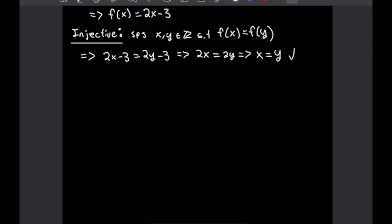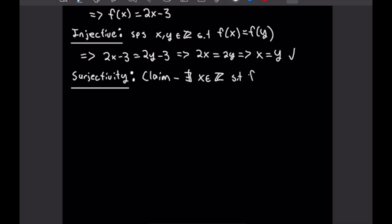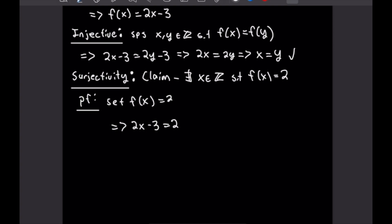So let's get into surjectivity. To prove surjectivity, we want to show that for all b in B, which is our codomain, we have an a in A such that f of a is equal to b — in other words, all of the elements in our codomain can be mapped to by our function. This is actually not a surjective function. I'm going to claim that there does not exist an x in the integers such that f of x is equal to 2. Setting f of x equal to 2 means that 2x minus 3 equals 2, and adding 3 to both sides gives us 2x equals 5. But that is a contradiction, as we can't multiply an integer by 2 and get 5. So there does not exist an integer x such that f of x is equal to 2, which means this is not surjective.